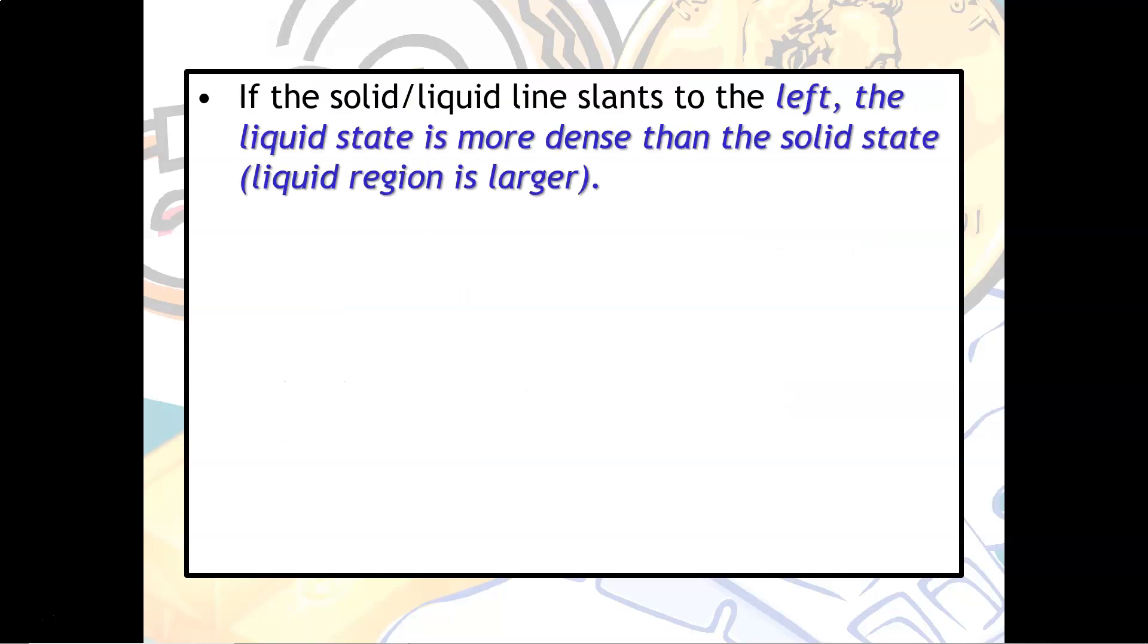There's a very easy way to tell, looking at a phase diagram, what is going to be the most dense state of matter. If the solid liquid line slants to the left, the liquid state is more dense than the solid state. It typically looks something like this. Another way you can look at it is if this liquid region is larger, that's usually going to be the more dense state. And so this is going to represent water.